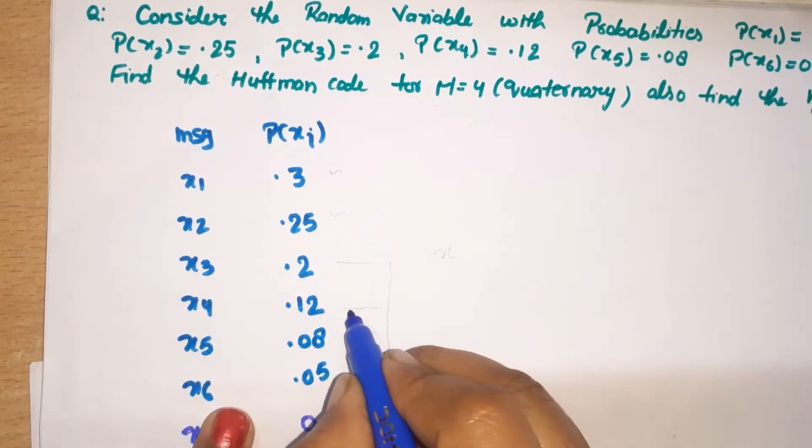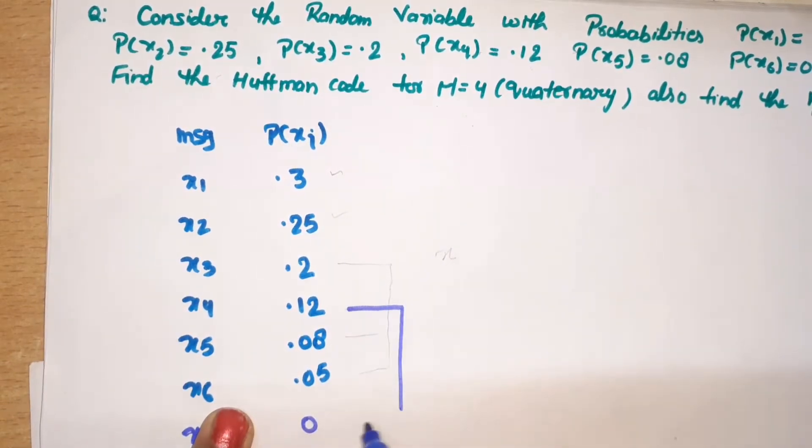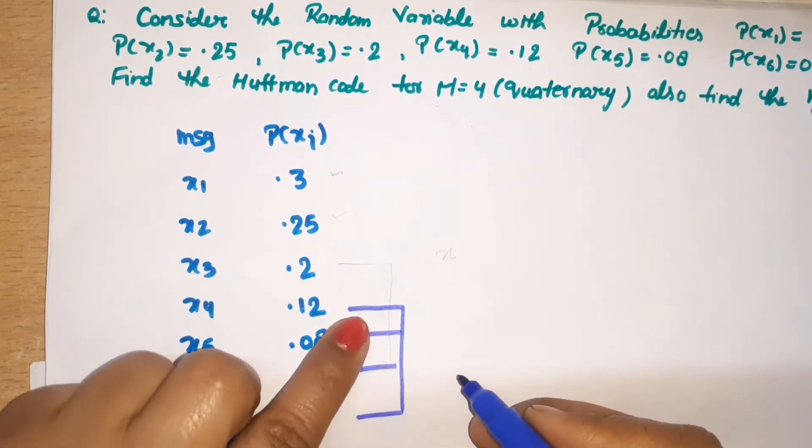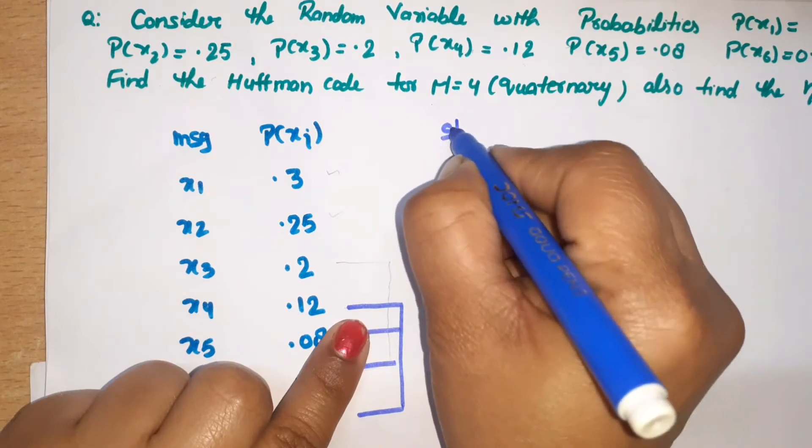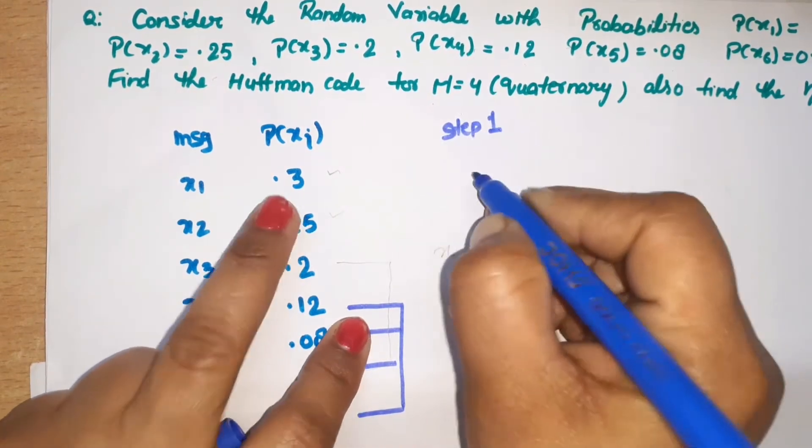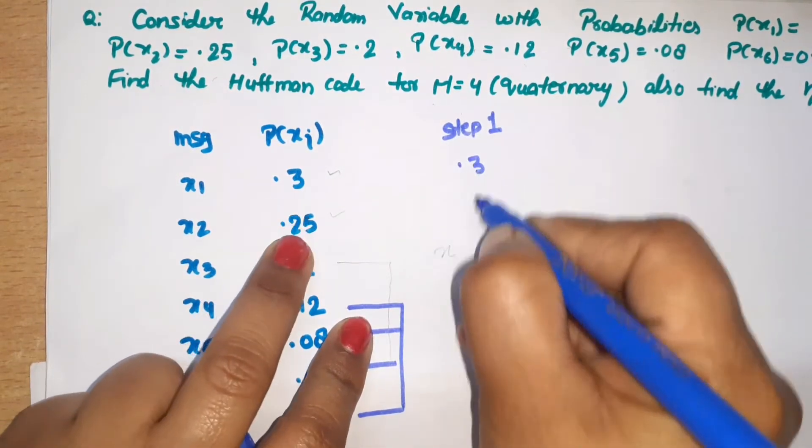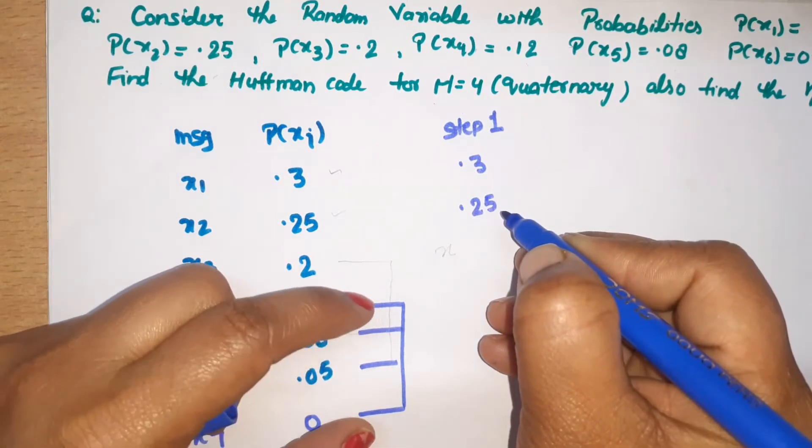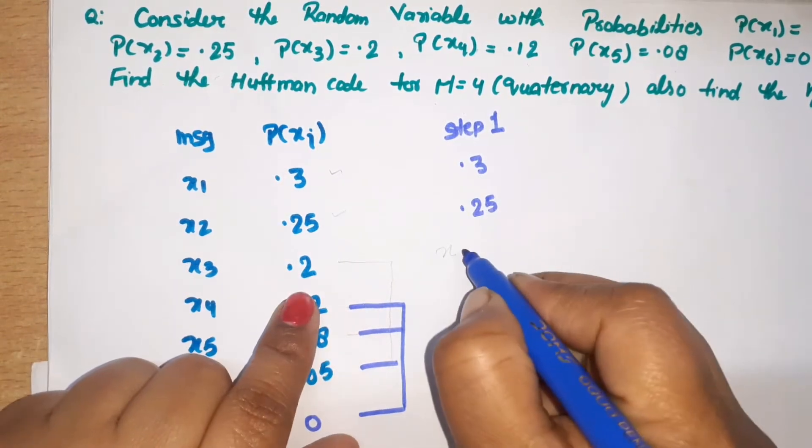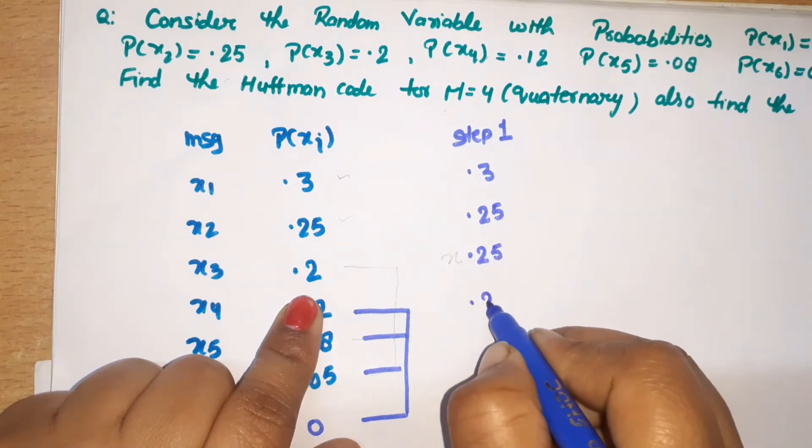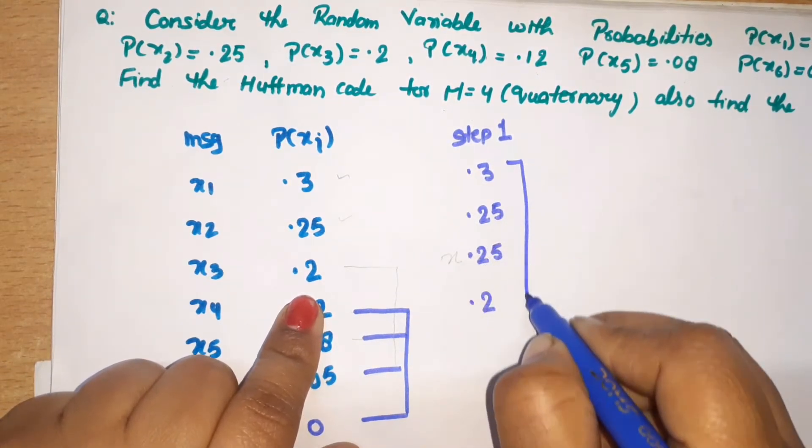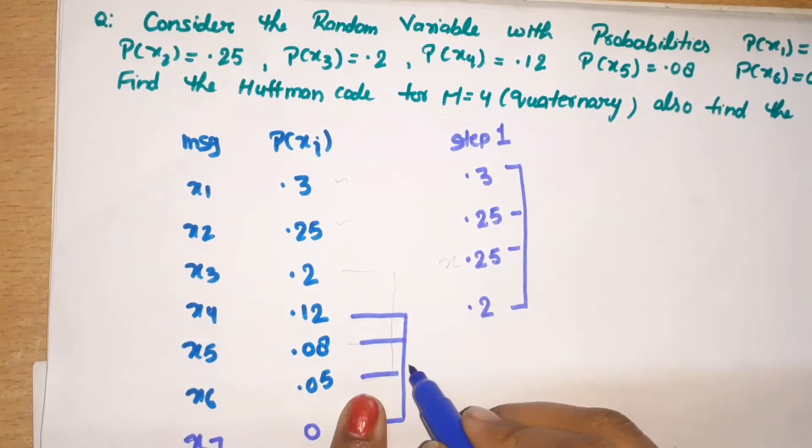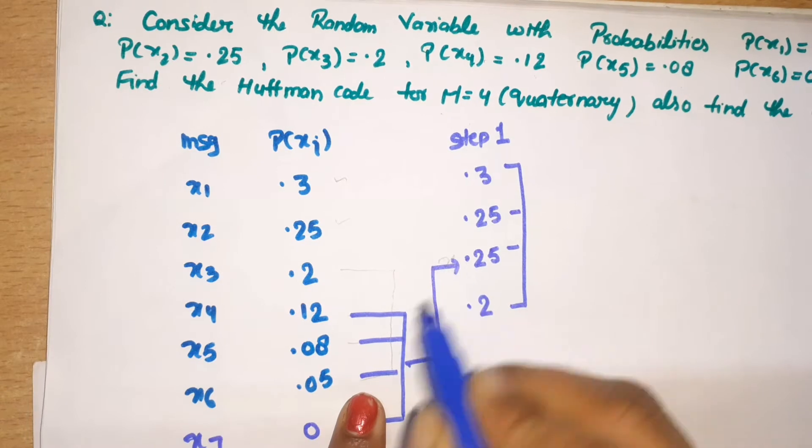Now if we take the summation of the last 4 values, when we combine them together, the value will be 0.25. In step 1, after the first reduction, we arrange: 0.3, 0.25, and this summation is also 0.25. This 0.25 is greater than 0.2, so we arrange as 0.3, 0.25, 0.25, 0.2. This is the last step.